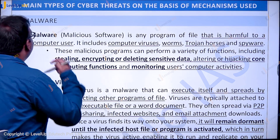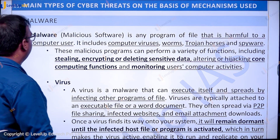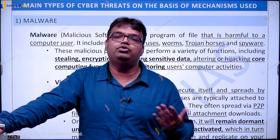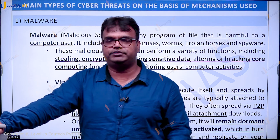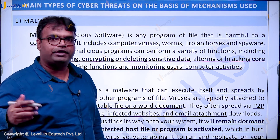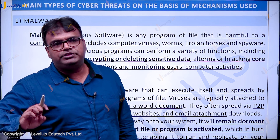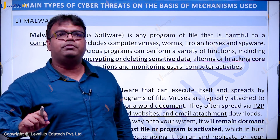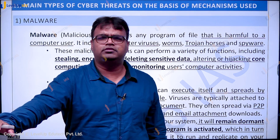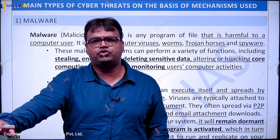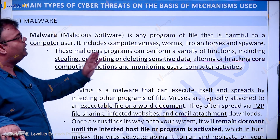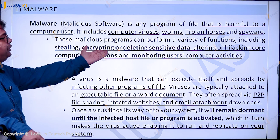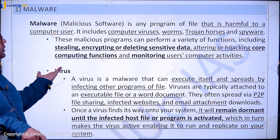Here are the main types of cyber threats based on the method they use. Generally, what happens is a malware may be introduced in your system. The word malware comes from malicious software. Malware or malicious software may be a virus, it may be a worm, it may be something else with a wrong intention — interested in stealing your data, stealing your processing power, or just making a computer slow. Malware is any program or file that is harmful to a computer user. It includes viruses, worms, Trojan horses, spyware, etc. The purpose of malware may be stealing, encrypting or deleting sensitive data, altering or hijacking core computing functions, and monitoring users' computer activities.